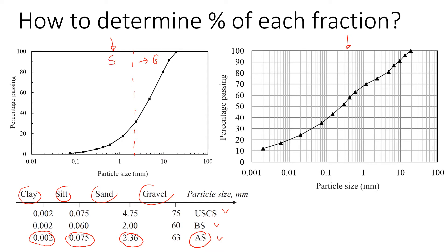Now let's draw another boundary between sand and silt at 0.075 millimeters. This is exactly where the last point of the curve is, so everything to the left is going to be fines. For this case we don't know how much is silt and how much is clay, so we just call it fines.